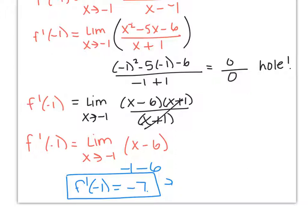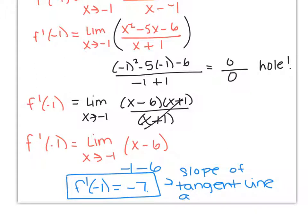This is the slope of the tangent line at x equals negative 1, which is the exact same answer as we got on the front. If you have any questions, please jot them down and bring them into class tomorrow and we'll go over it. Have a good night.